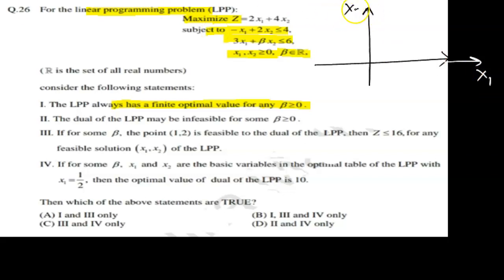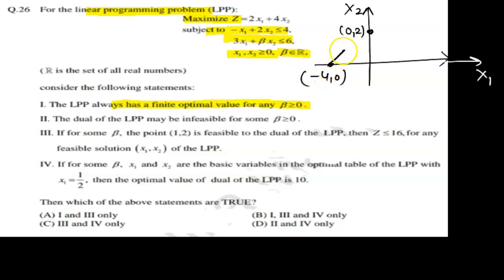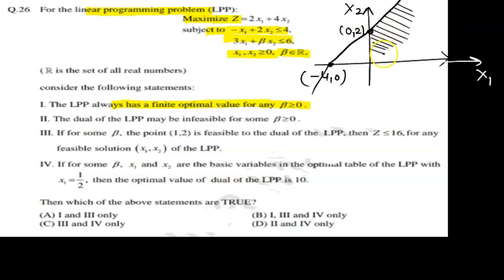On the x2-axis, when x1 = 0, x2 = 2, giving point (0, 2). When x2 = 0, x1 = -4, giving point (-4, 0). So one line passes through both points. Checking the region with (0,0): we get 0 ≤ 4, so the feasible region is on that side. Taking x_i ≥ 0, we stay in the first quadrant.